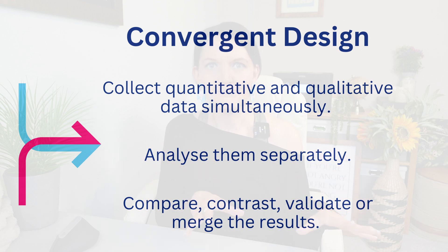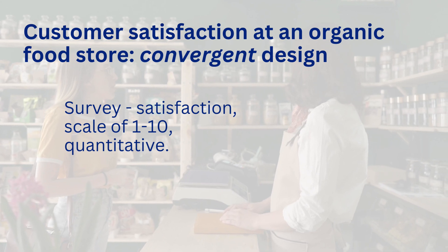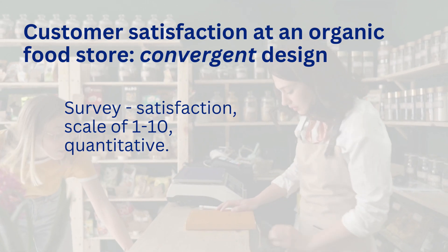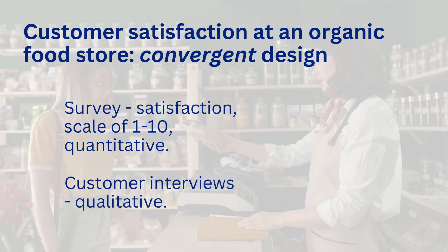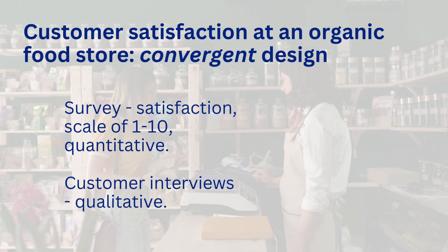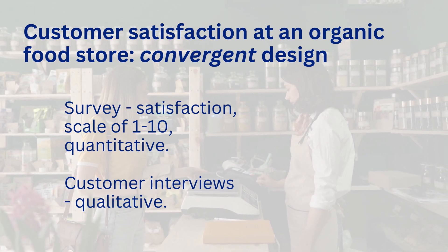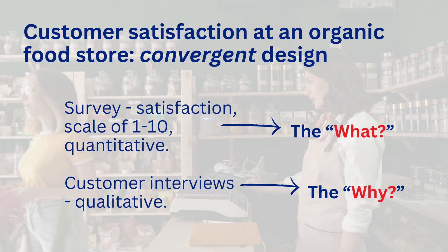Let's take a closer look at integration within the three designs. In the convergent design, you gather both sets of data at the same time, then compare or combine the results to see how they align or contrast. For example, imagine you're studying customer satisfaction at an organic food store. You distribute a quantitative survey asking customers to rate their satisfaction on a scale of one to ten, and you might find that most give high ratings. However, qualitative interviews conducted at the same time might reveal that while customers are generally happy with product quality, they feel the store is a little too expensive. The survey tells you what people think; the interviews explain why, giving you a more complete picture.